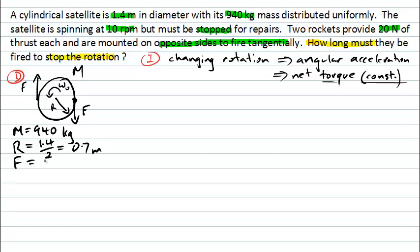There's some forces being applied, and each of those forces is in fact 20 newtons in magnitude. We know the initial angular velocity here is 10 rpm, that's revolutions per minute, which we can then write in our preferred units. One revolution is 2π radians.